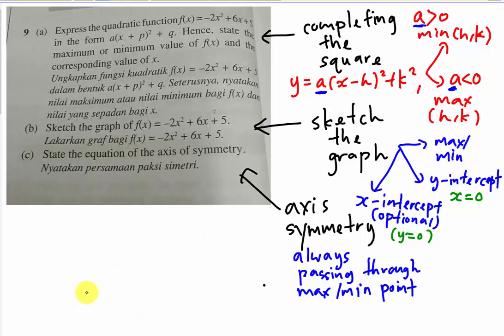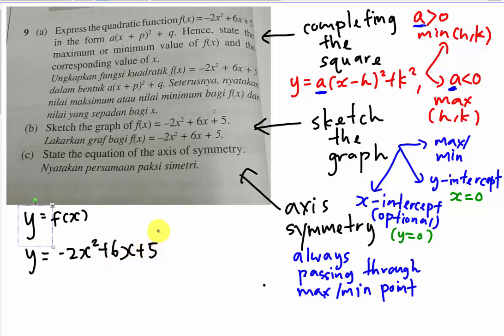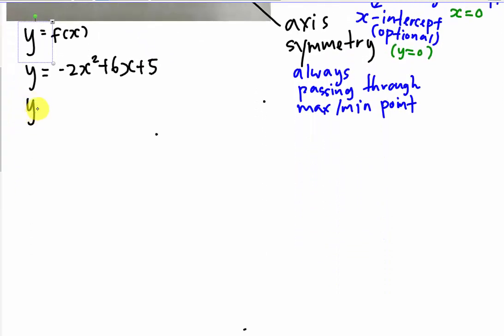Now we go into the question. I will let y equal to f(x), so y equals negative 2x squared plus 6x plus 5. The first step is completing the square. You make sure the coefficient of x squared is 1 — since we have negative 2, we factorize negative 2 out. Normally I factorize for the first and second terms only, though you can include the third term and get the same result.